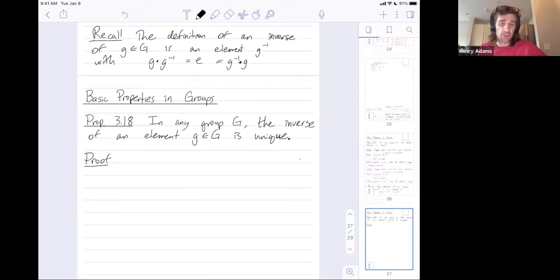So what we're going to do for this proof is we're going to assume we had two different inverses for g and then we're going to prove that they're equal to each other. So let g inverse and maybe g tilde inverse be two inverses. Let me remove the word different. Let me just say let them be two inverses for g.